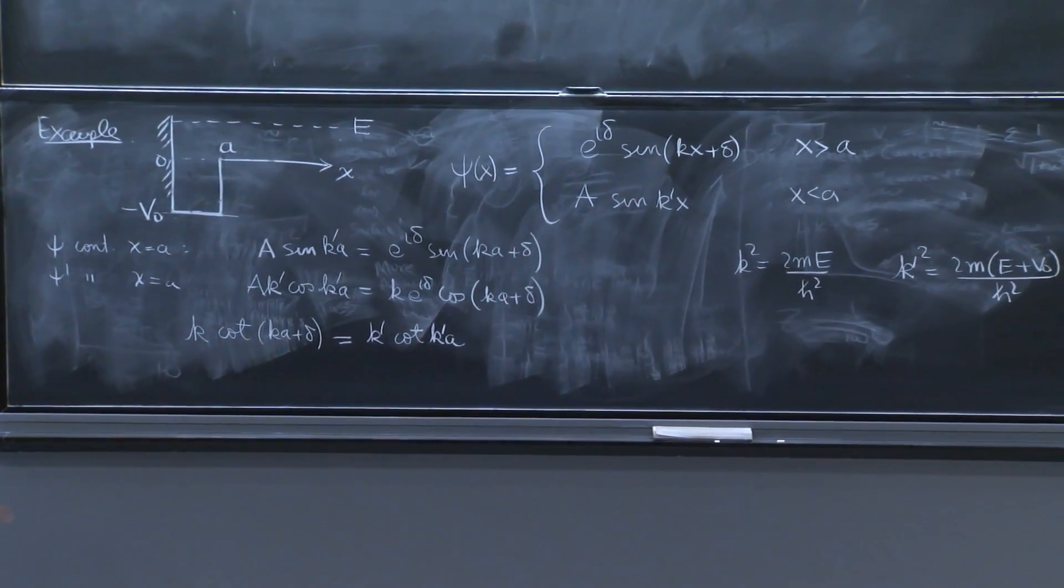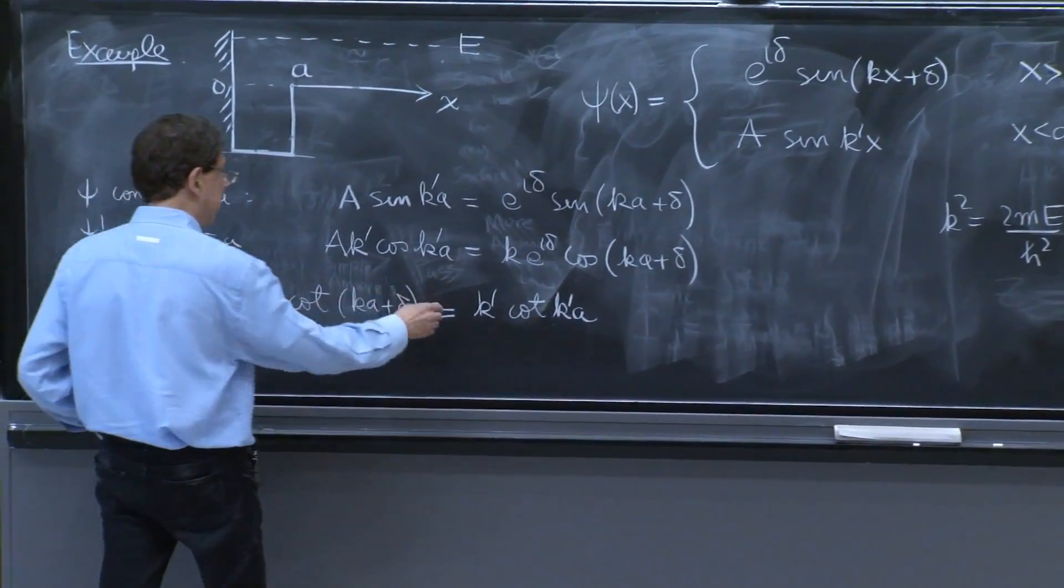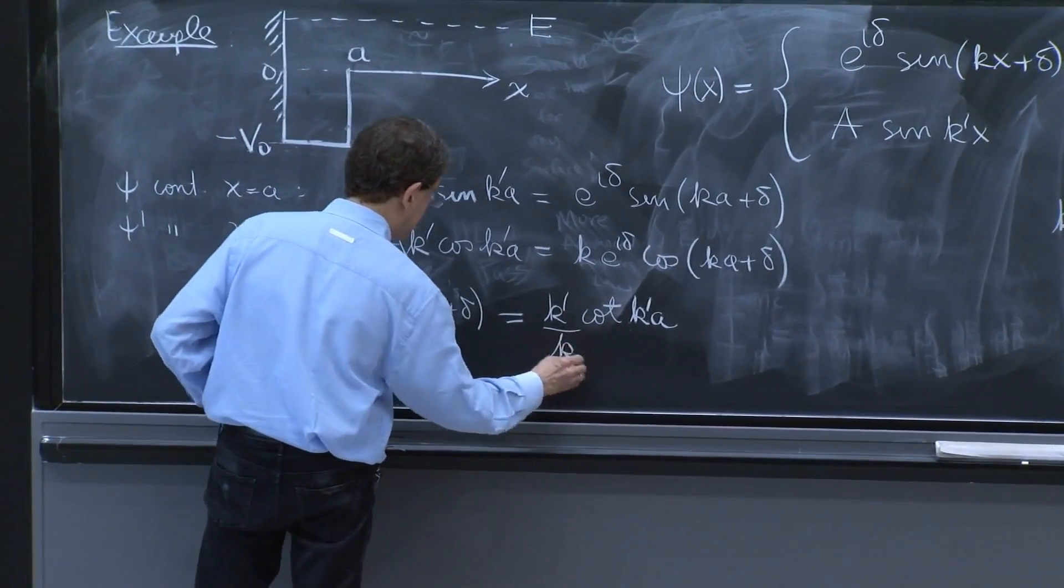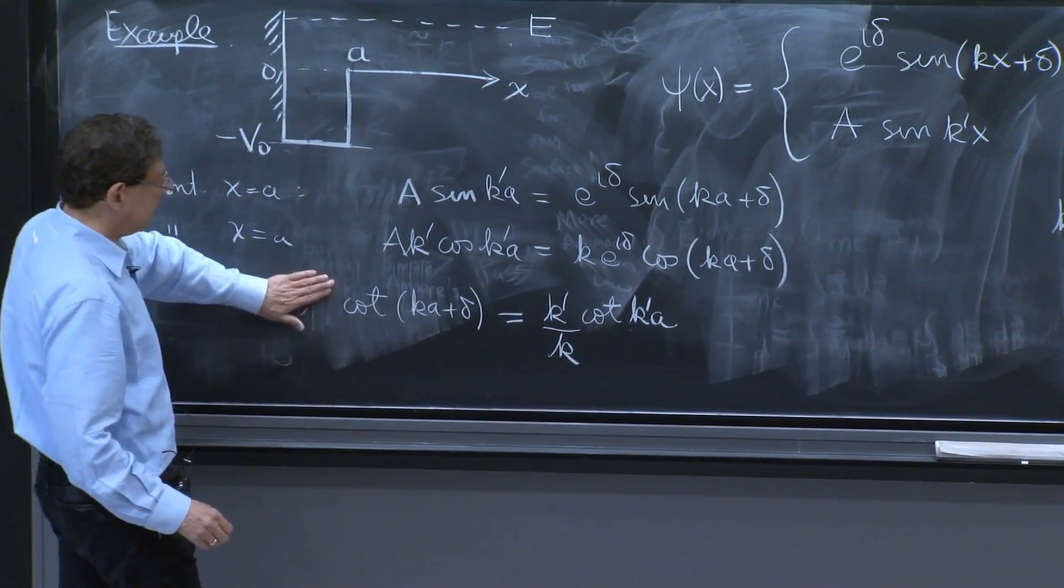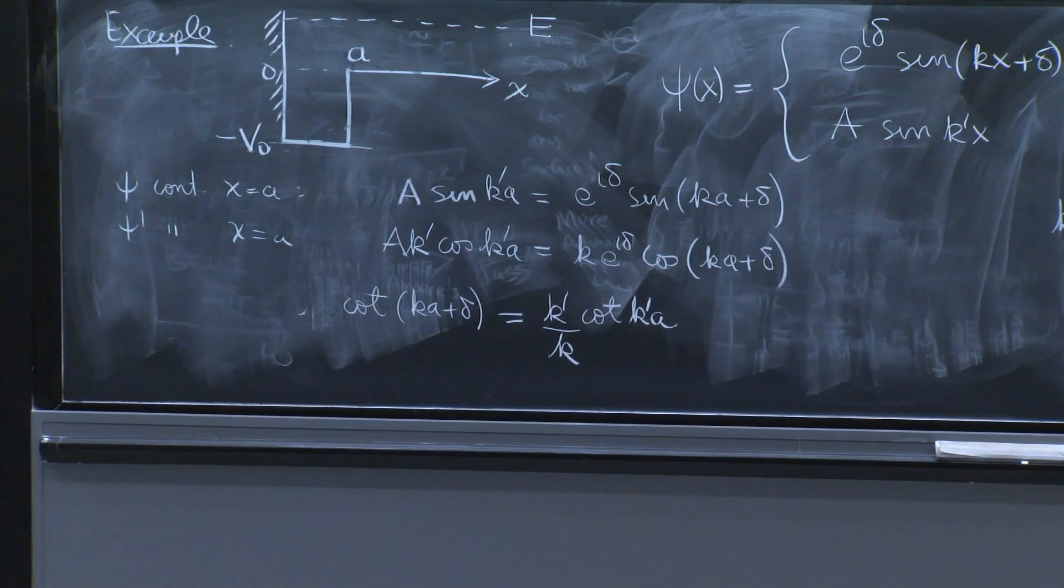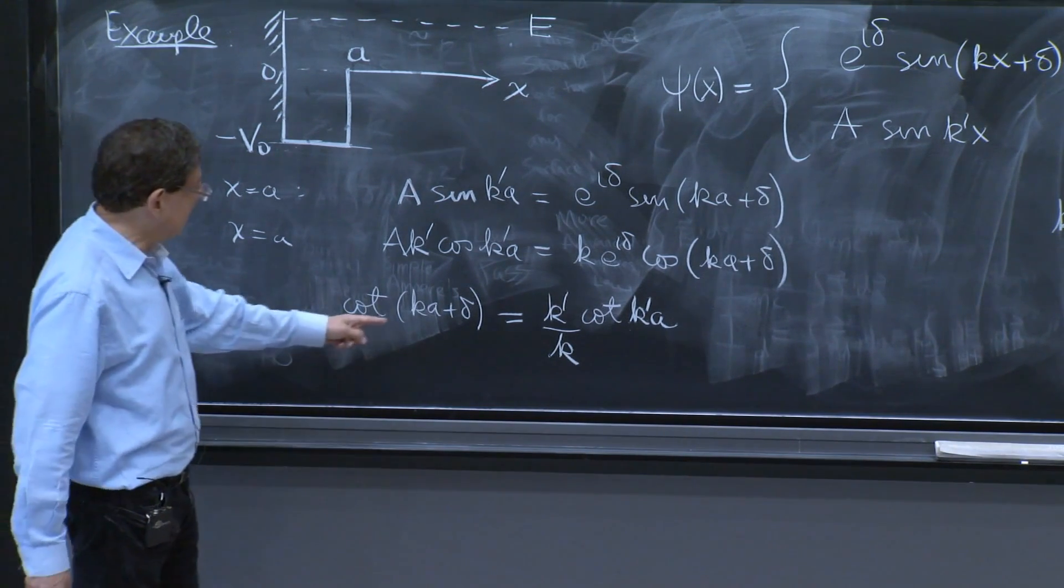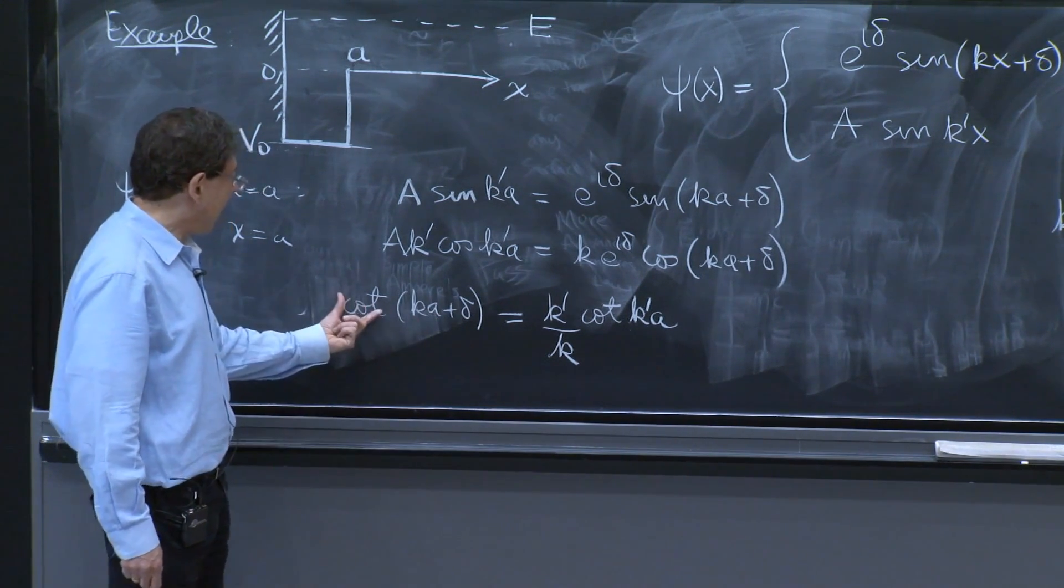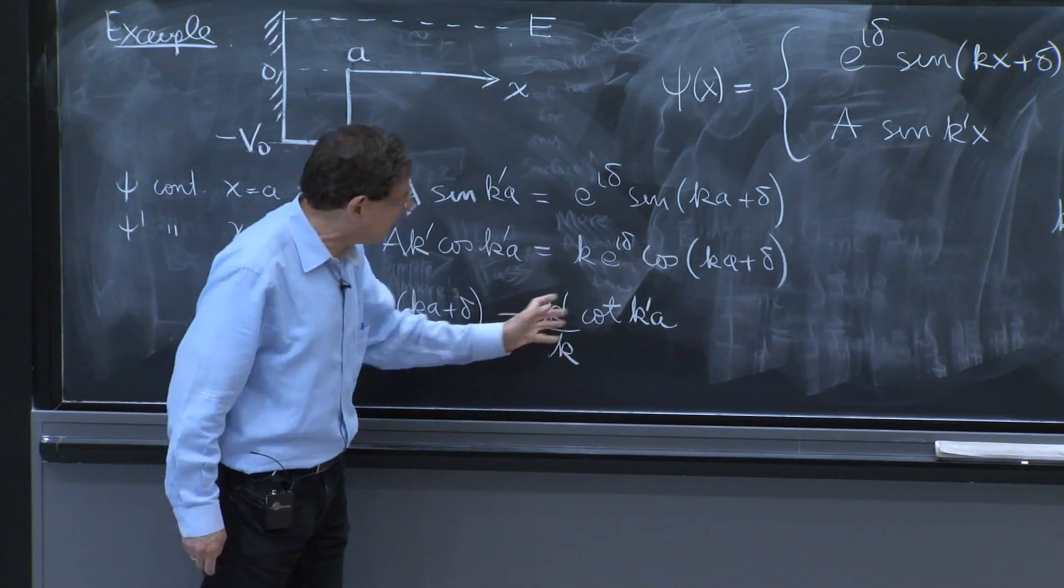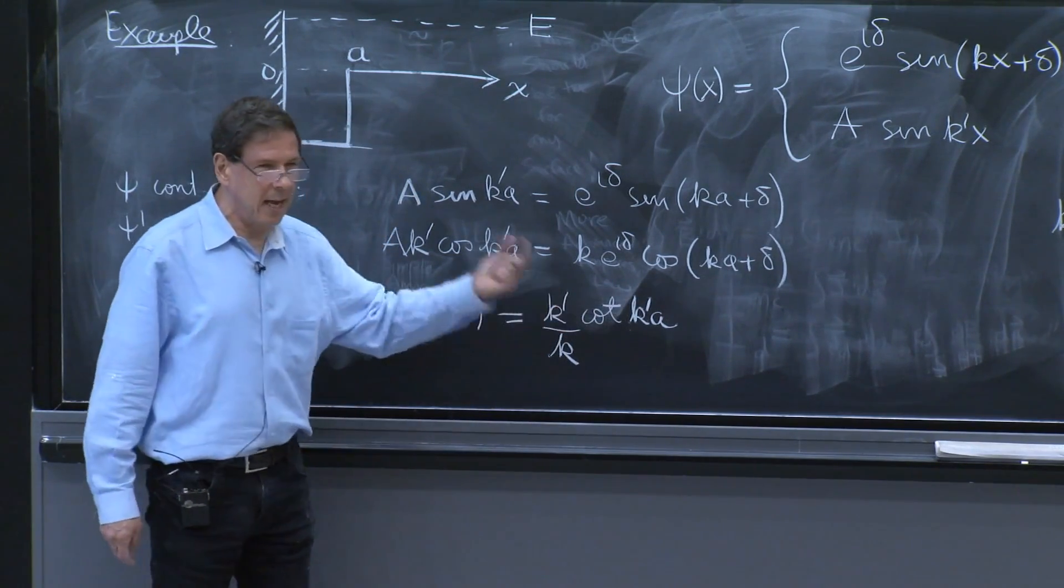Or cotangent of k a plus delta is k prime over k. I will erase this. And now you can do two things. You can display some trigonometric wizardry. Or you say, OK, delta is arc cotangent of this minus k a.